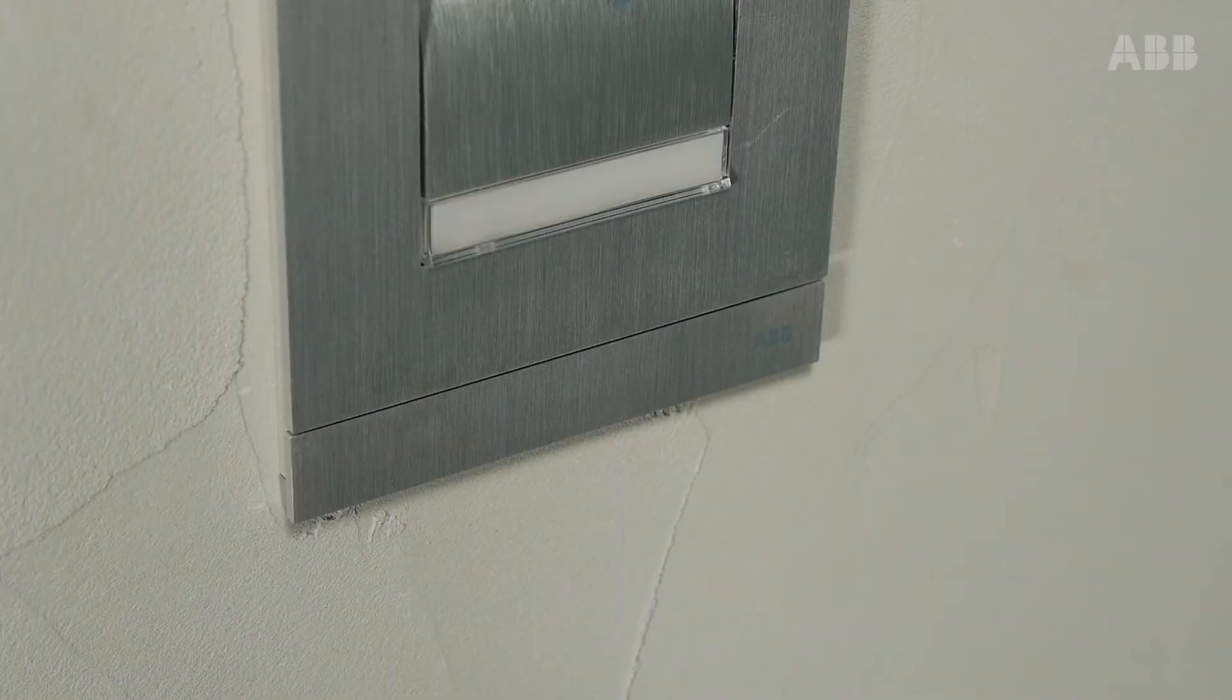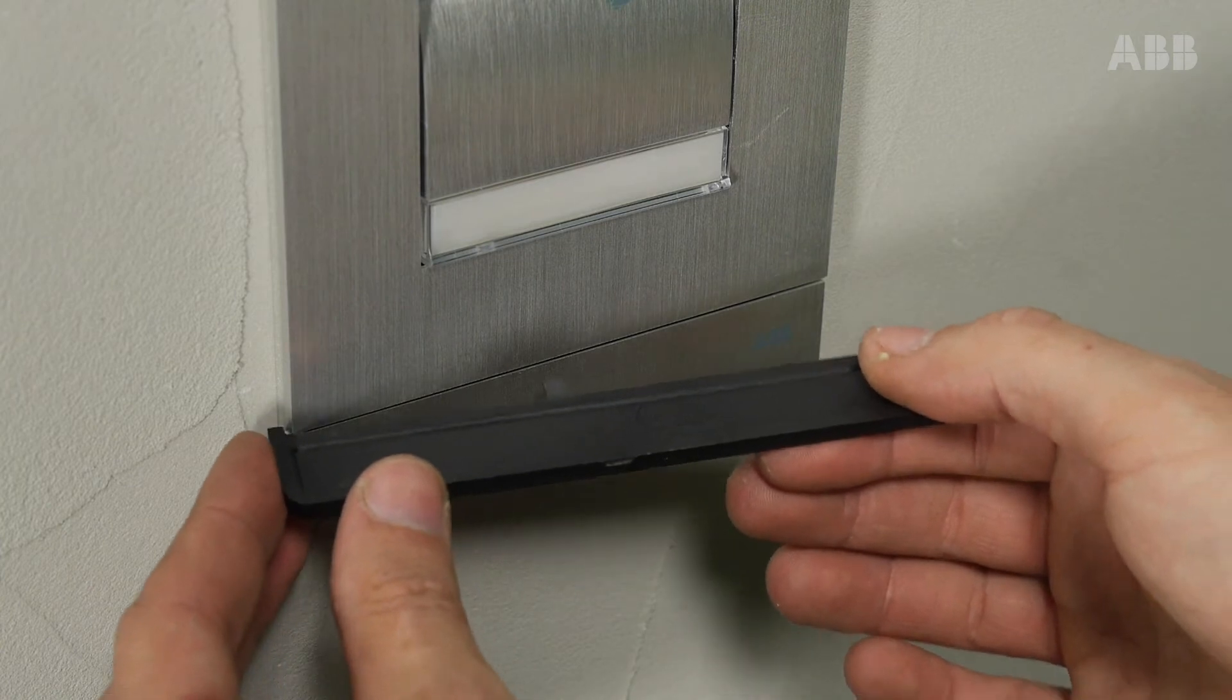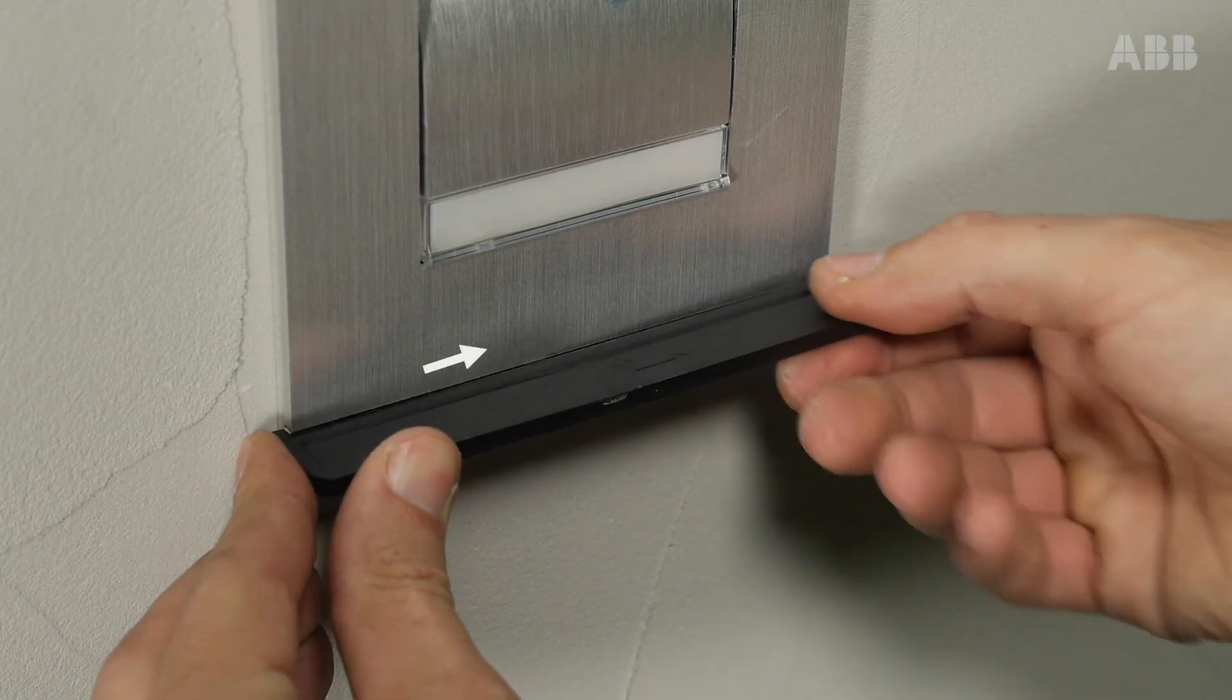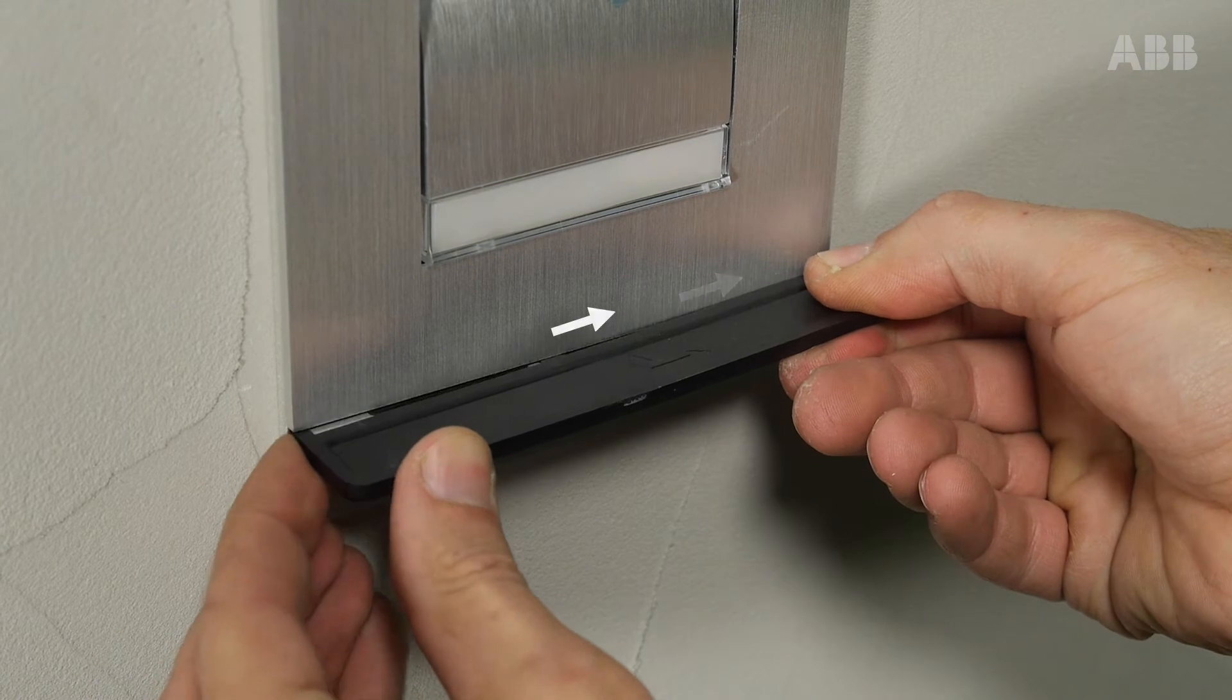Start by opening the outdoor station using the plastic strip provided in the kit. Insert it into the slit, push and slide it to the right.